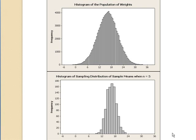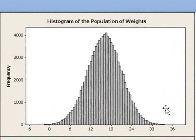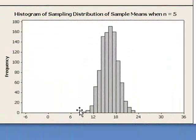What do you see? Keep in mind that the values represented in the population histogram are the 100,000 individual weights from the population, and the values represented in the sampling distribution histogram are the 1,000 sample means taken by repeatedly sampling from the population.